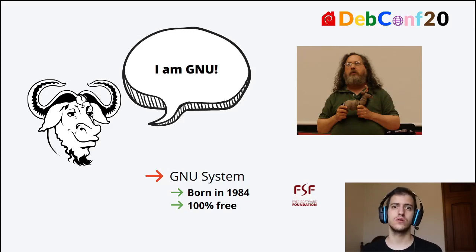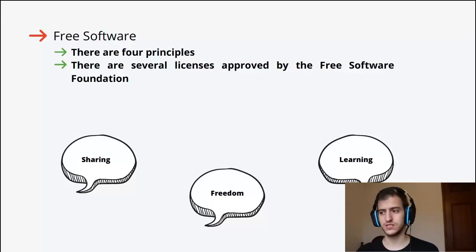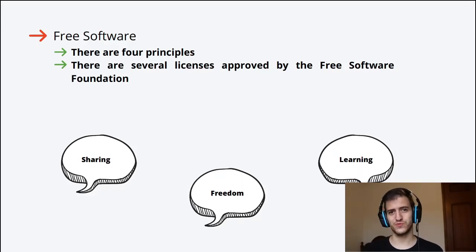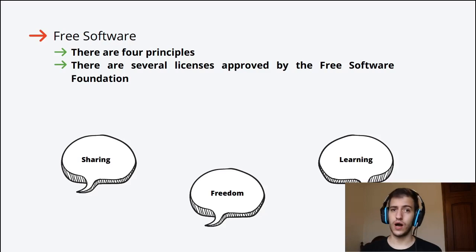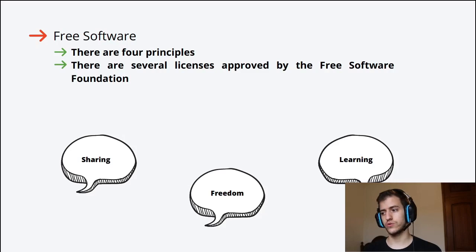Now I'm going to show you what's actually free software. Free software has four principles. The first is the freedom to run a program as you wish for any purpose. The second is the freedom to study how the program works and change it so it does your computing as you wish — access to the source code is a precondition for this. The third is the freedom to redistribute copies so you can help others. And the fourth is the freedom to distribute copies of your modified versions to others, so you can give the whole community a chance to benefit from your changes.